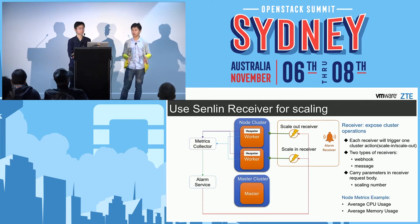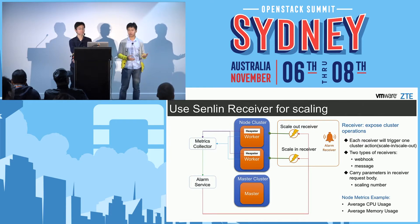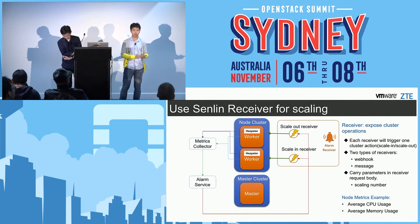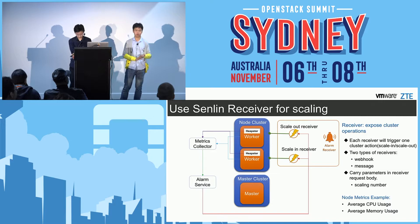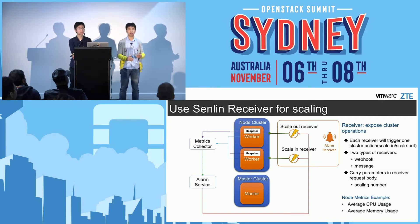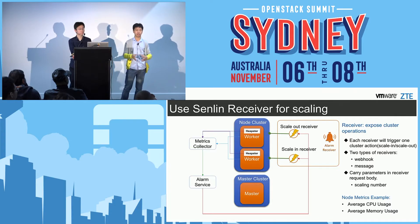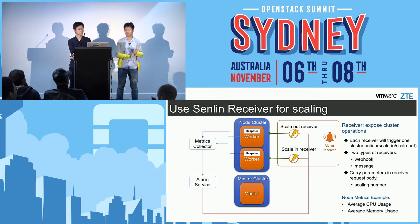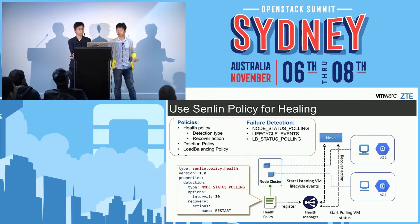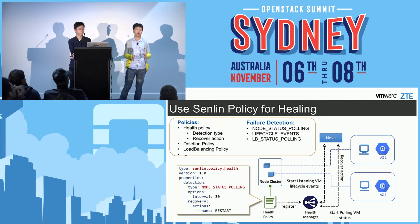For the Kubernetes cluster, I use Heapster to collect metrics from the nodes in the cluster. You can collect CPU usage or memory usage and then use an alarm system to send the alarm to the Senlin receiver. Alternatively, we can leverage Ceilometer to collect virtual machine metrics and then use Aodh to create an alarm based on those metrics and send out the alarm notification to the Senlin receiver.